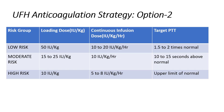Now let's discuss a risk-based anticoagulation strategy using unfractionated heparin. For the low-risk group, the loading dose will be 50 IU/kg followed by a continuous infusion of 10 to 20 IU/kg/hour with a target PTT of 1.5 to 2 times the normal value. For the moderate-risk group, the loading dose will be 15 to 25 IU/kg followed by a continuous infusion of 10 IU/kg/hour.